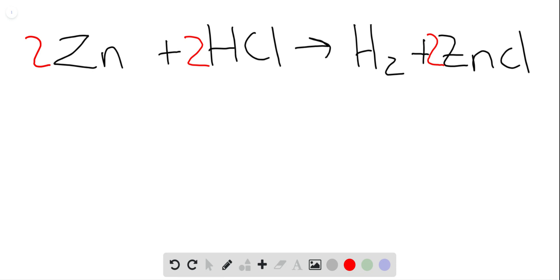Or for every two zinc atoms and two molecules of hydrochloric acid, I would produce one molecule of hydrogen gas and two molecules of zinc chloride. So when we look at the students' responses, the first one: